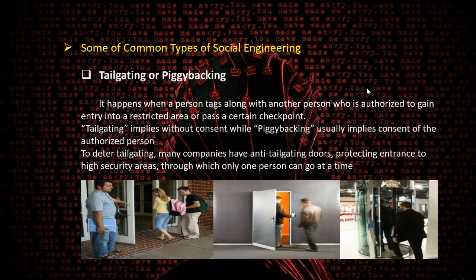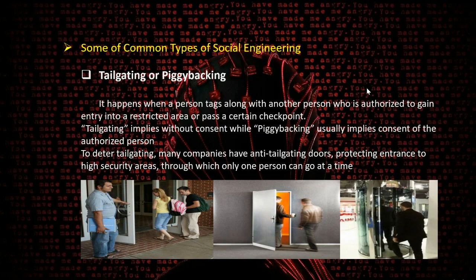The next type is tailgating, commonly seen at office entrances, where one person swipes their card and another enters without swiping. This should be completely avoided. Tailgating happens when an unauthorized person follows an authorized person into a restricted area. Many companies have implemented anti-tailgating doors to protect highly secured areas, allowing only one person to pass at a time.